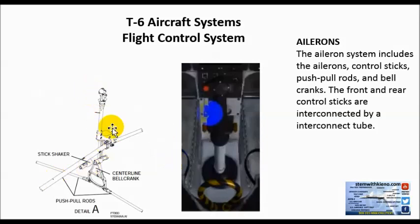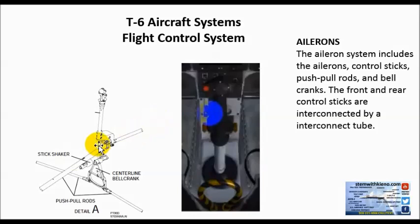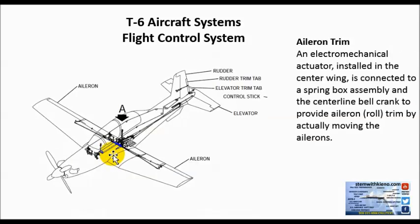You would have your stick here from the simulator — basically the control stick. You have your centerline bell cranks, push-pull rods, and they're interconnected between the front and rear cockpits. So whatever the student naval aviator's stick does, the instructor pilot's stick moves as well, all in the same direction.